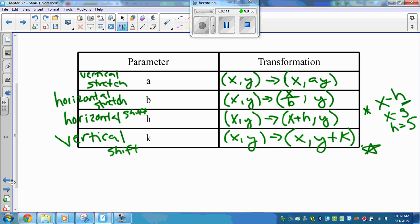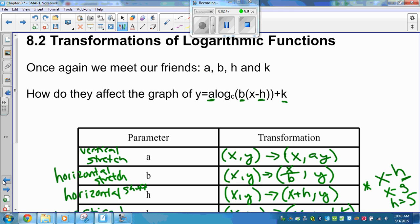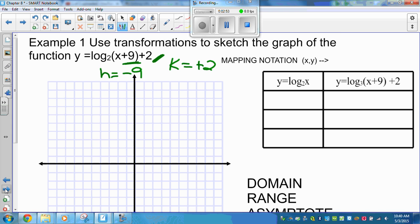So this is a good chart to refer to and to have open when you're doing these transformations. So we're going to use transformations to sketch the graph of Y equals log 2X plus 9 plus 2. So a couple things we have to look at, first of all, is what values we have. Here, I have an H and a K. So K is equal to positive 2. Here, H is negative 9. The reason it's negative 9 is our form is always X minus H. And here I have X minus negative 9. That's why my H is negative 9.